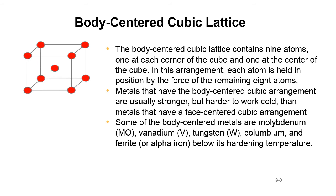Body-centered cubic lattice. The body-centered cubic lattice contains nine atoms, one at each corner of the cube and one at the center of the cube. In this arrangement, each atom is held in position by the force of the remaining eight atoms. Metals that have the body-centered cubic arrangement are usually stronger but harder to work cold than metals that have a face-centered cubic arrangement. Some of the body-centered metals are molybdenum, vanadium, tungsten, columbium, and ferrite or alpha iron below its hardening temperature. This is a very important slide, this and the next couple. If you really want to get into this metallurgy, these are the basics of metallurgy.